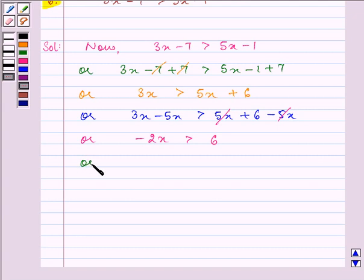Now, dividing both sides by negative 2 and changing the sign of inequality, since it is getting divided by a negative number, we have the value of x as x is less than minus 3.